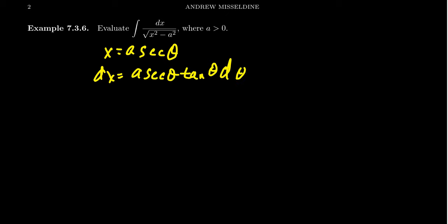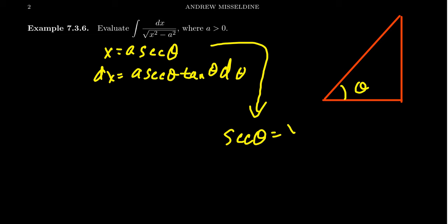And as we've seen before, if we were to draw our triangle, our triangle here, the angle associated to this triangle, we're going to call it theta. And playing around with this friend right here, we see that secant theta equals x over a, which is to say cosine theta equals a over x.